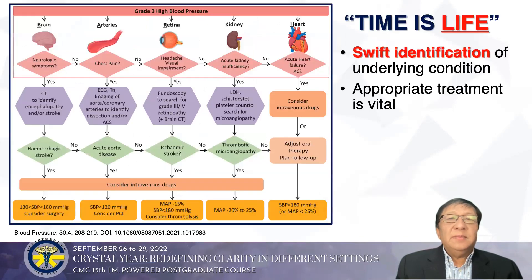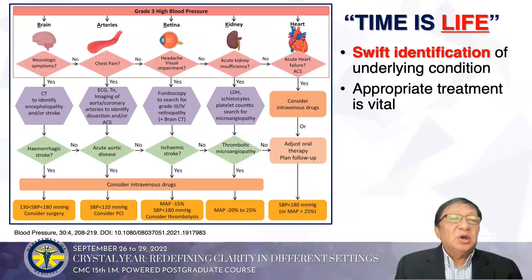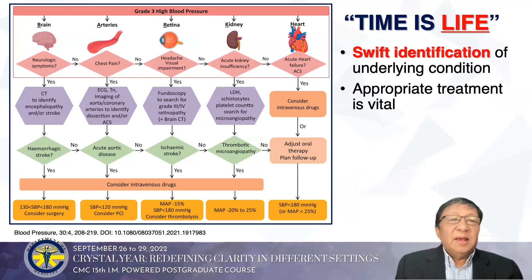Applying the BARC algorithm — time is life. Quick identification of the underlying condition is vital. For grade 3 high blood pressure with neurologic symptoms, perform CT to rule out stroke; if CT is positive with high BP, consider intravenous drugs. If there is chest pain, do ECG and troponin, image the aorta and coronary arteries to identify dissection or ACS, and if acute aortic disease is found, consider IV drugs.